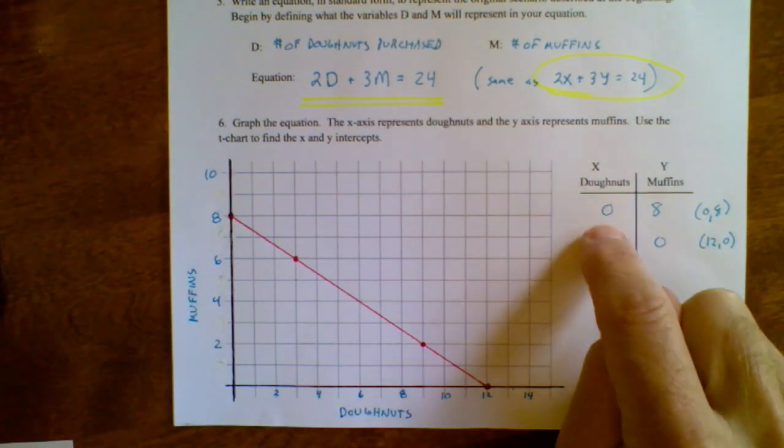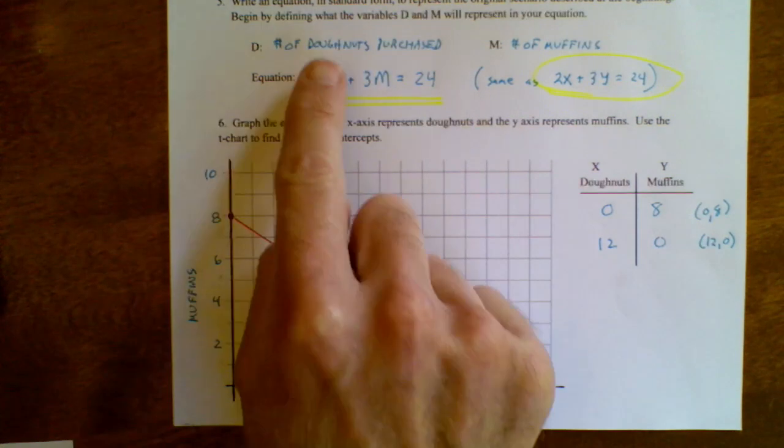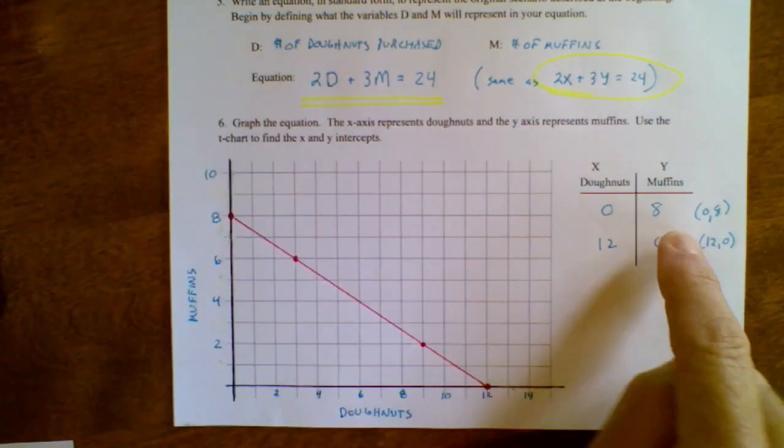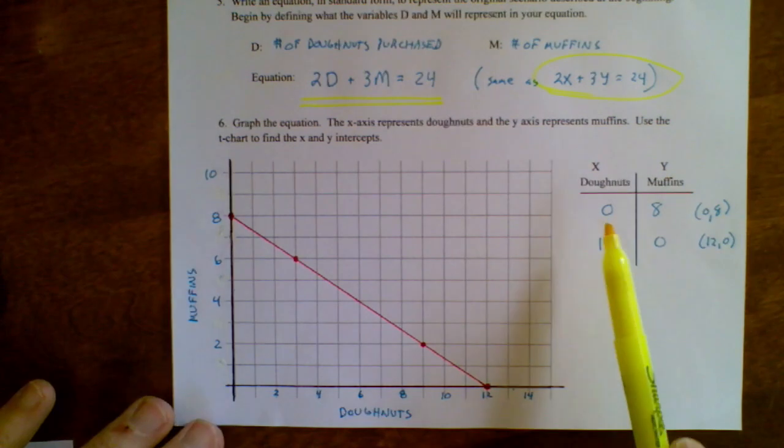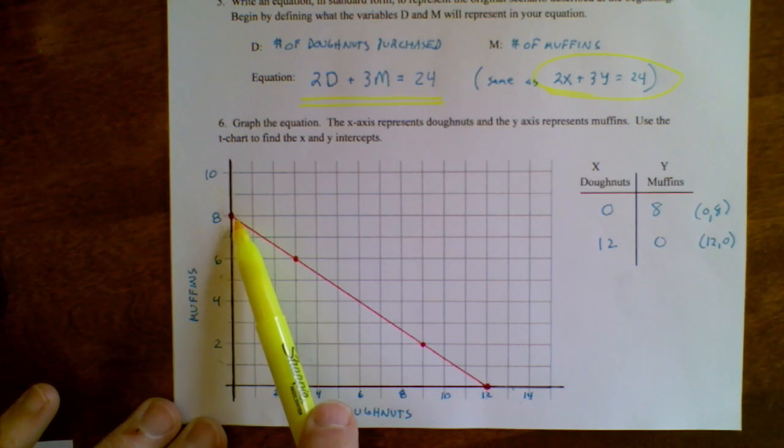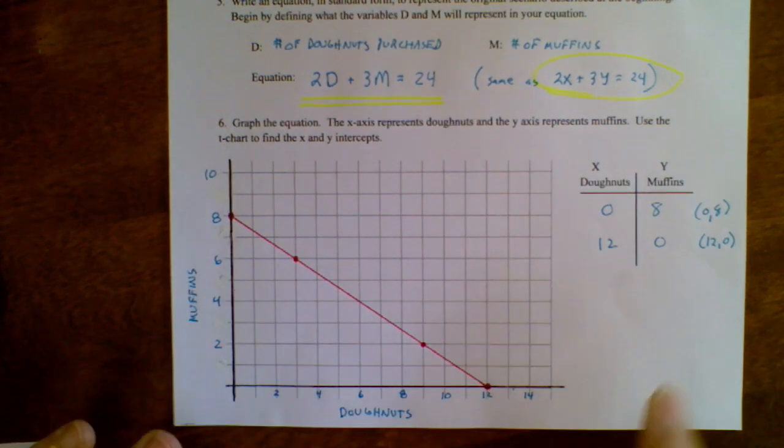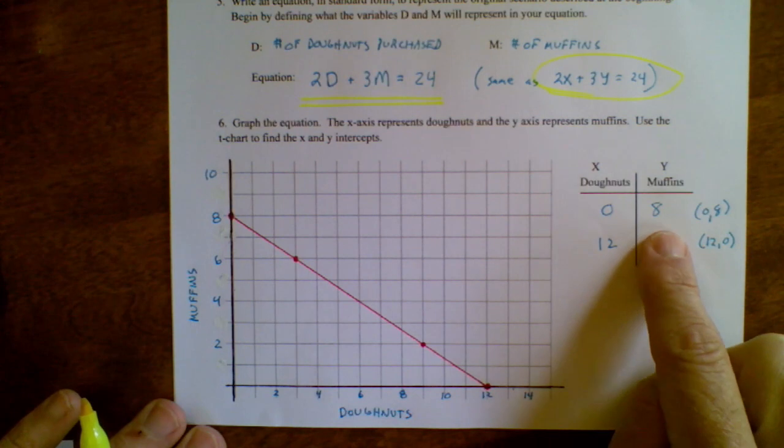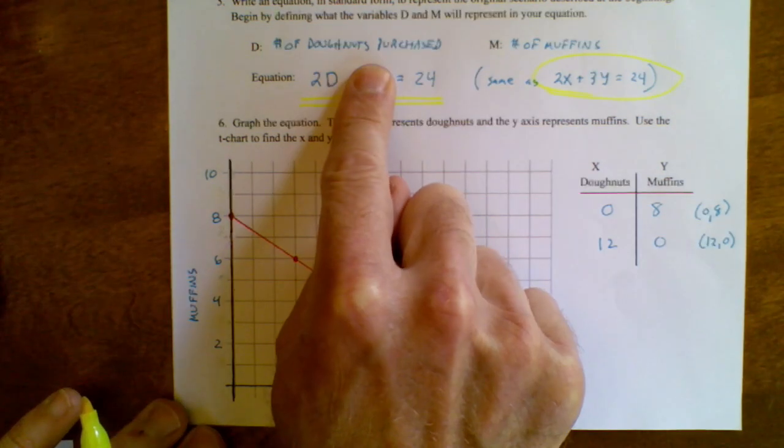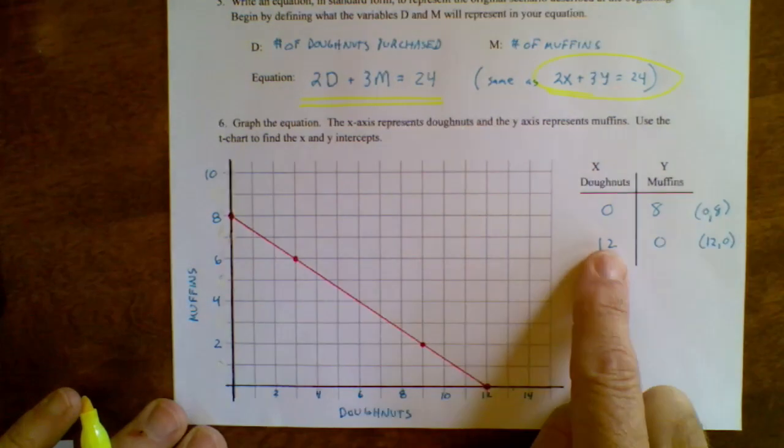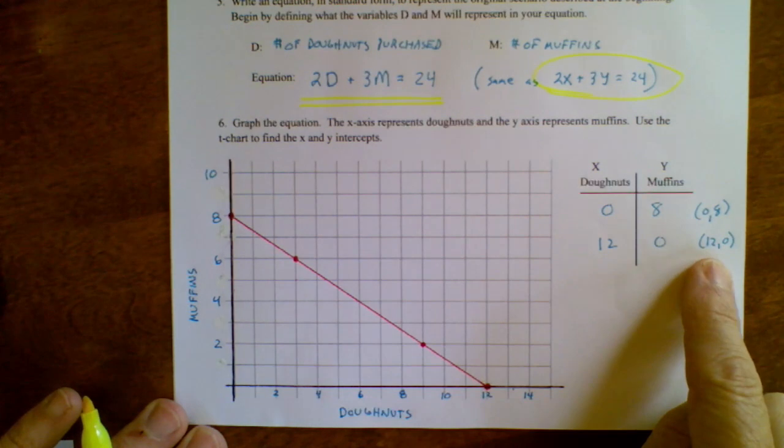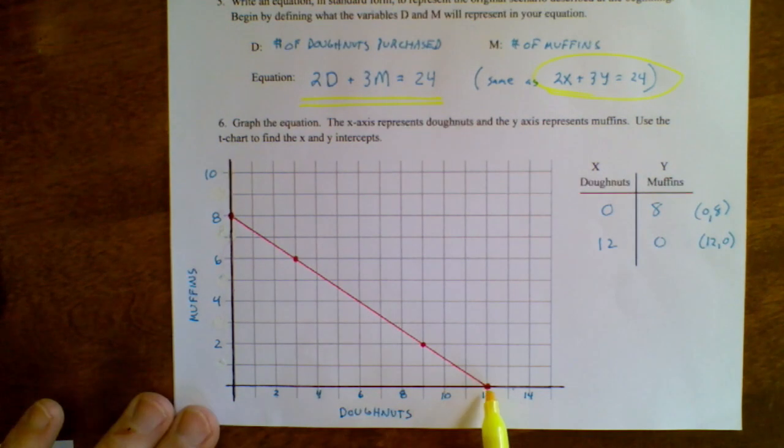Plug in a 0 for x or D, and I can do the math and say 3m equals 24, M equals 8. In other words, if I bought 0 donuts, I would get 8 muffins, or that's my y-intercept, 0 comma 8. Same thing over here. Plug in a 0 for the number of muffins, which means you cover up that part. That means you would have room for 12 donuts, or this is my x-intercept, or it's the point 12 comma 0, and it goes right here.